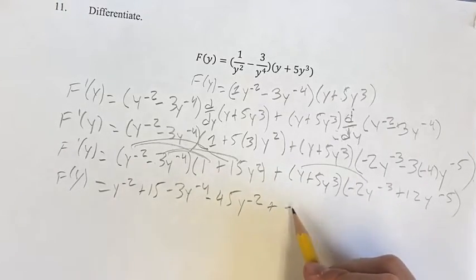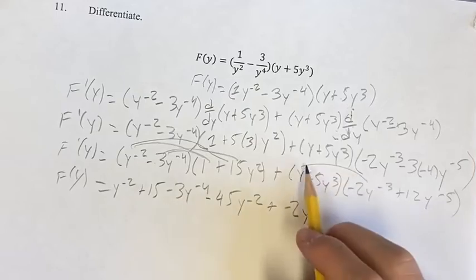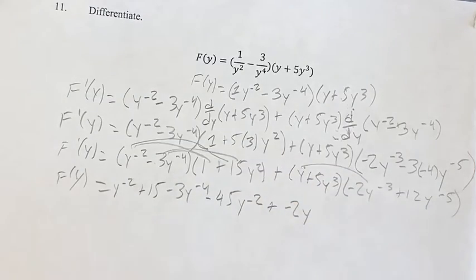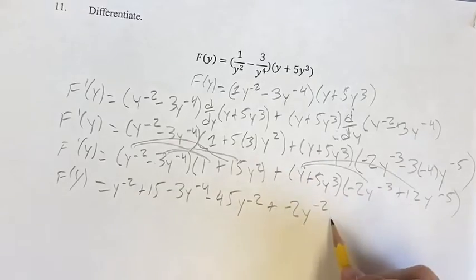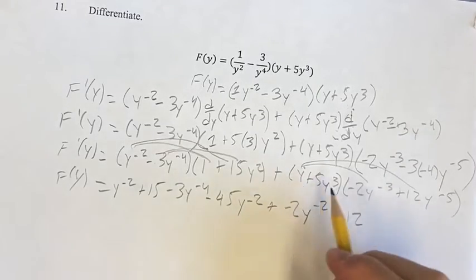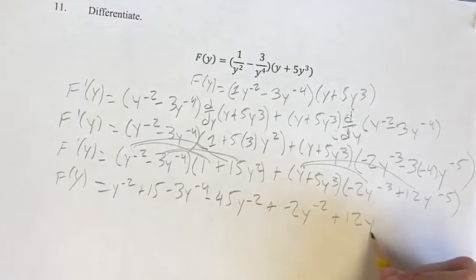Plus here we have negative 2y to the 1, think of y as y to the first power, so the 1 minus 3 is negative 2, plus 12y to the 1 minus 5 is y to the negative 4.